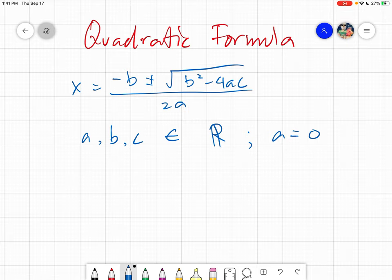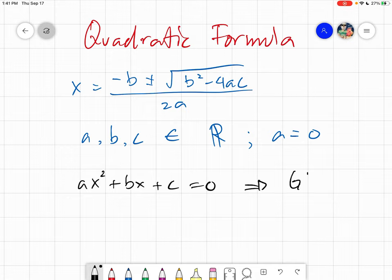The values a, b, and c can be derived from the general form or the general equation of any quadratic equation, which is ax squared plus bx plus c equals zero. The a and b are the numerical coefficients and c is the constant, or it could also be c is the numerical coefficient of x raised to zero.